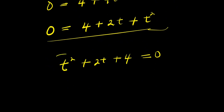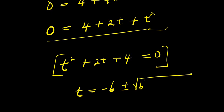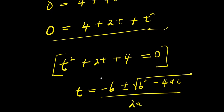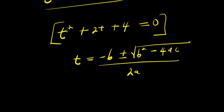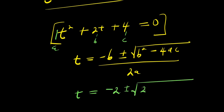To solve this we use the quadratic formula, because this is a quadratic equation. We have t equals negative b plus or minus square root of b squared minus 4ac, divided by 2a. From t squared plus 2t plus 4 equals 0: a equals 1, b equals 2, and c equals 4. Inserting these values into the formula.